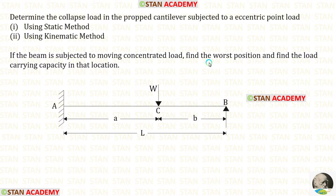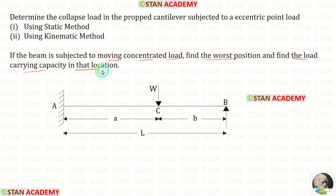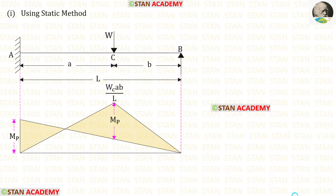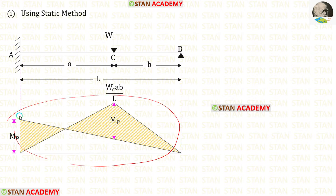Also in this beam we have to find the worst position when the beam is subjected to a moving concentrated load, and we have to find the load carrying capacity in that position. First let us find the collapse load using the static method. This is the bending moment diagram for a propped cantilever beam when it is subjected to an eccentric point load.